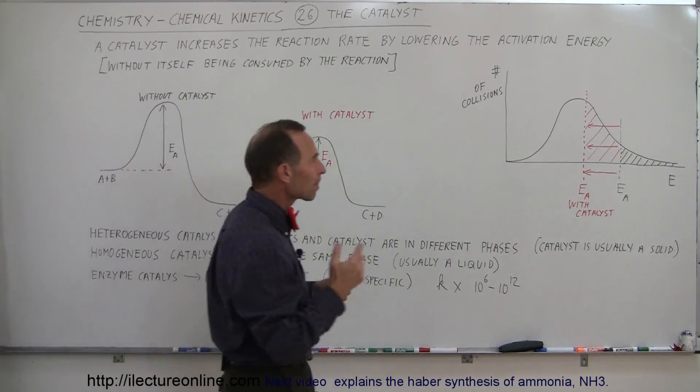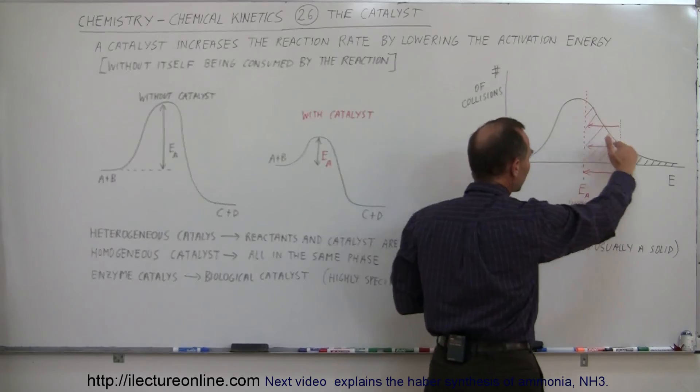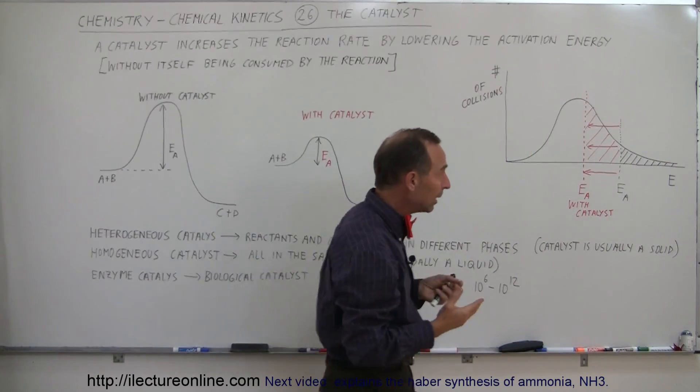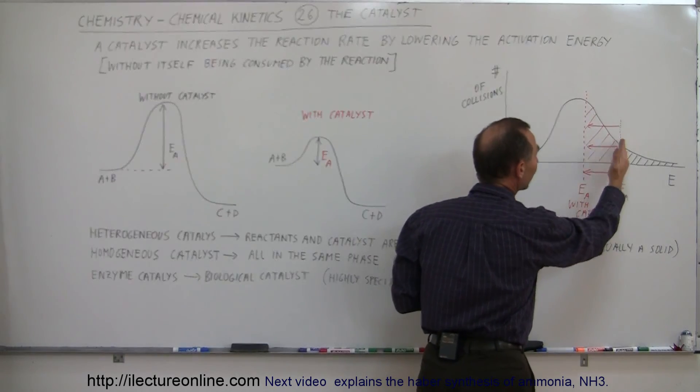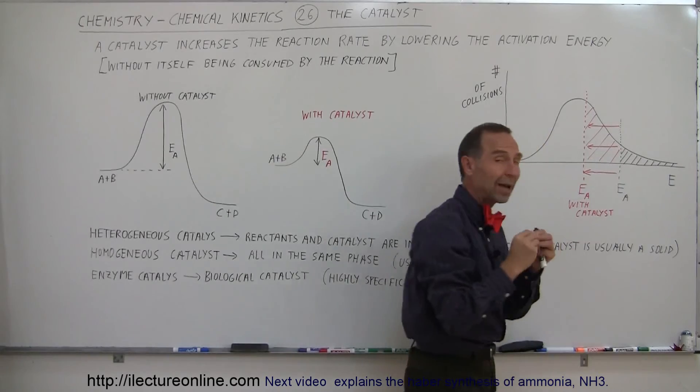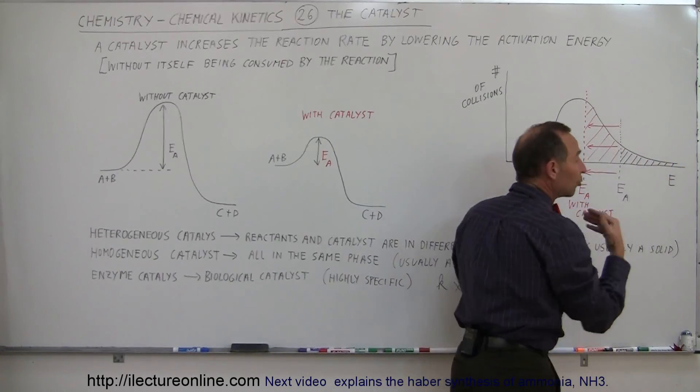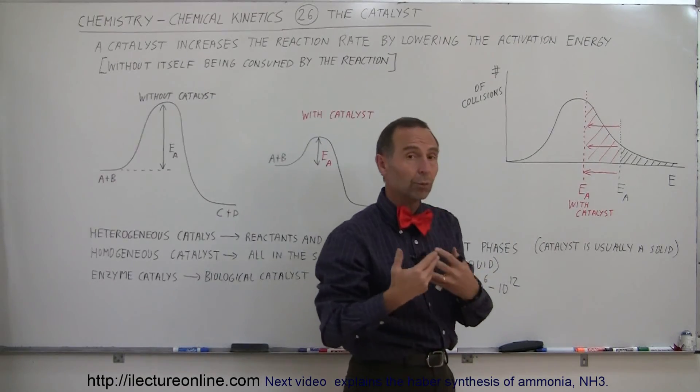Here I have a graphical display of this, where this is kind of a distribution of the energies of all the molecules in the reaction. And notice that the vast majority of them do have energy but not sufficient. Let's say that this is the amount of energy required for the reaction to take place. Only a small number of reactants will actually result when they collide in a reaction and produce the products.